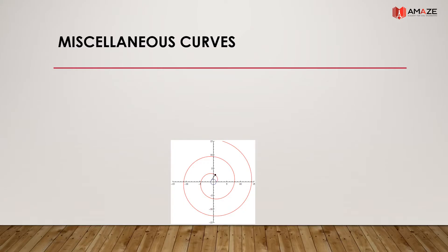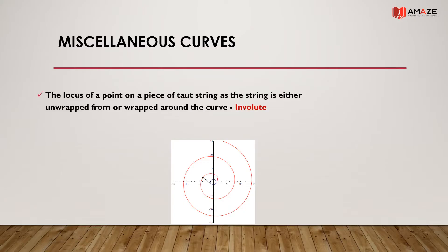Moving on to miscellaneous curves: the locus of a point on a piece of taut string as the string is either unwrapped from or wrapped around a curve is called an involute.